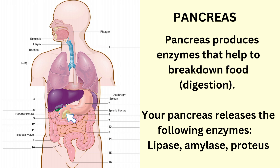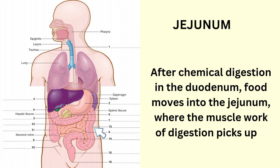Pancreas. The pancreas produces enzymes that help to break down food. Your pancreas releases the following enzymes: lipase, amylase, and protease.